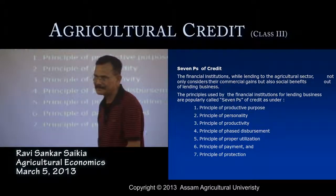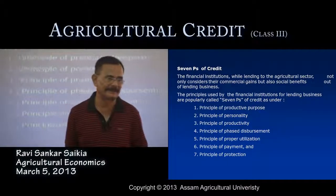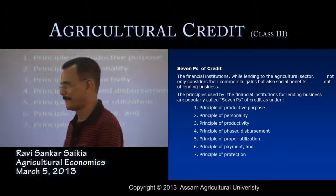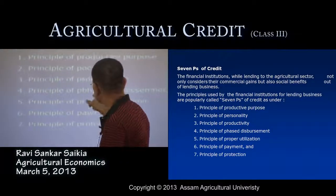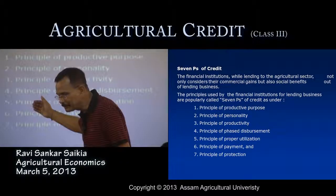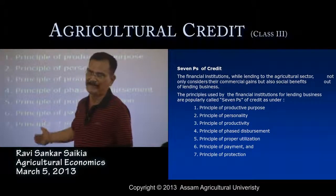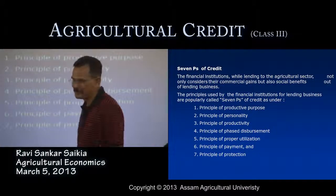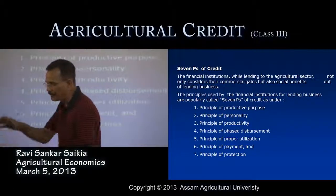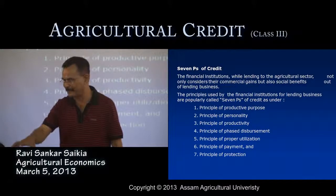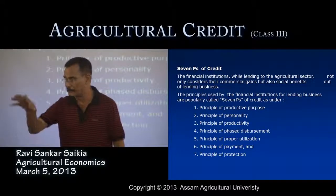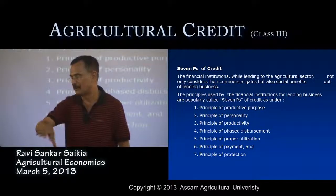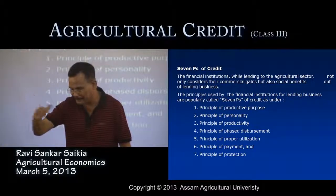The fifth principle is proper utilization, related to supervised credit — supervising the utilization of credit after disbursement to the farmer by bank officials. The sixth is the principle of payment — choosing the most appropriate repayment plan for farmers according to their situation. The seventh is the principle of protection — several protective measures are taken by the banking organization to overcome risk and protect the loan, giving farmers the ability to overcome risks.